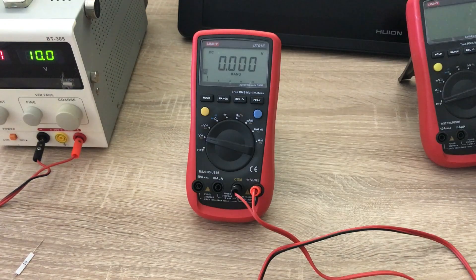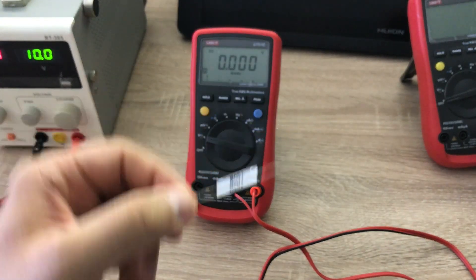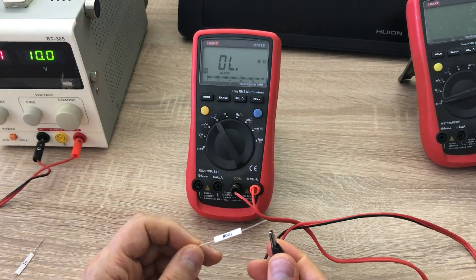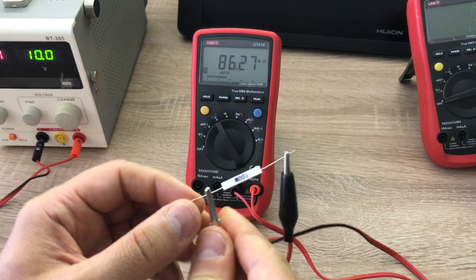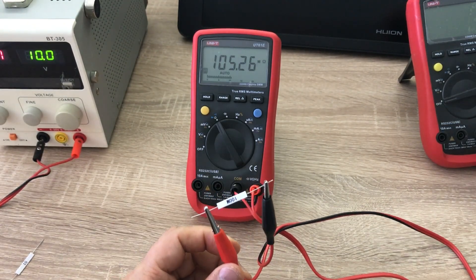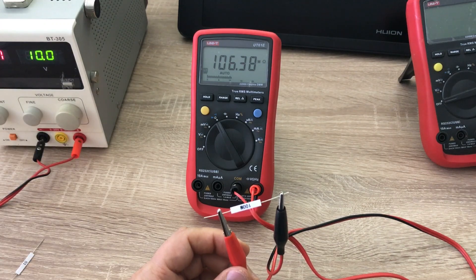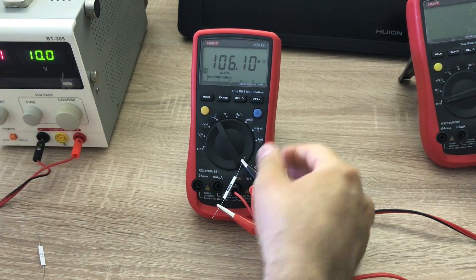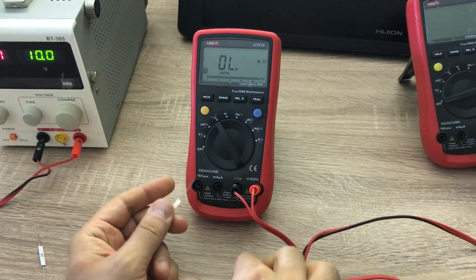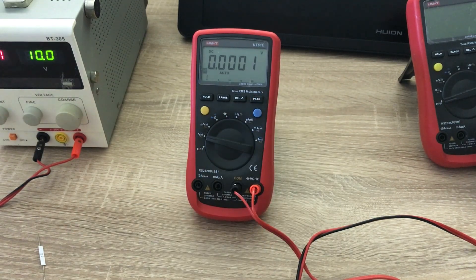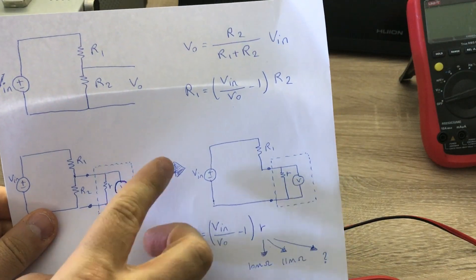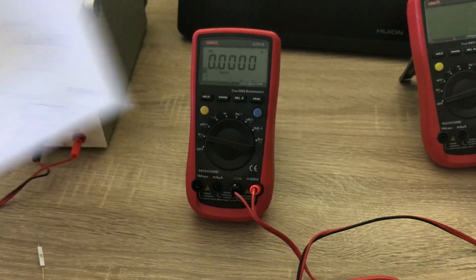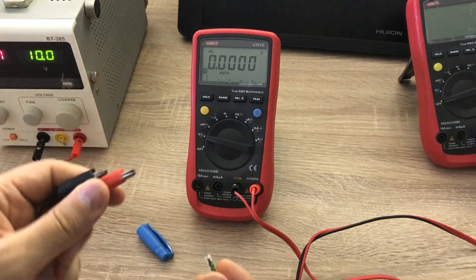Now let's do a calibration test to verify that our method works. I have a 100 megaohm resistor. I'll first measure it directly with the ohmmeter — it reads 106.4 megaohm (it's a 10% tolerance part so variation is expected). Now I'll set the other multimeter to voltmeter and connect the bench power supply through this resistor in series with the voltmeter, completing the circuit to ground.